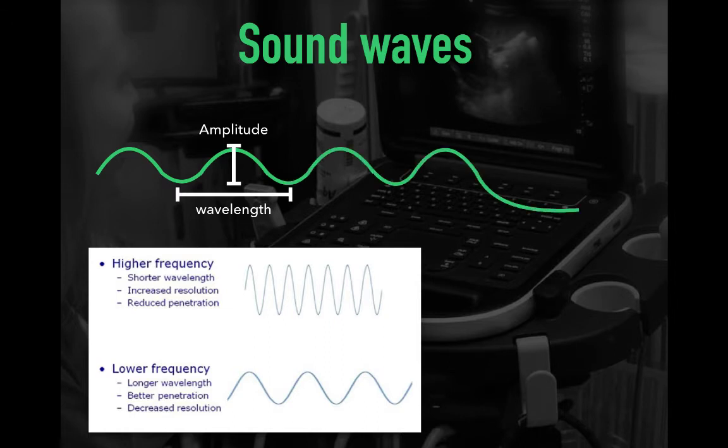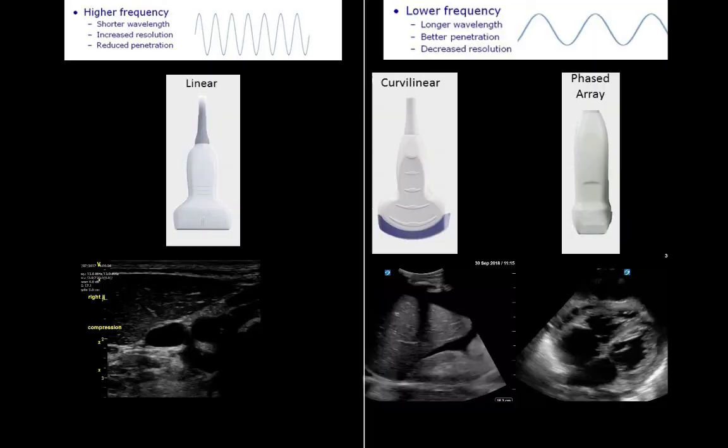Back to our sound waves. Ultrasound probes are designed to release a set frequency and wavelength — generally lower spectrum like 2 to 4 MHz, or high like 6 to 14 MHz, with the middle range in between. High-frequency shorter waves are great for superficial resolution but due to attenuation cannot penetrate deeply.